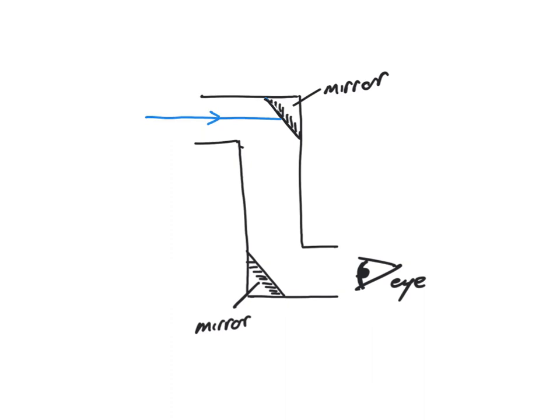we first need to mark in some normals, which are set at 90 degrees to the reflective plane. That helps us understand how the light will pass through the periscope.